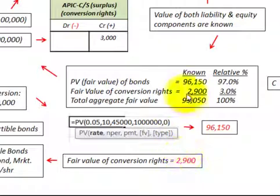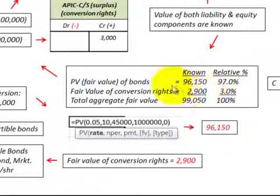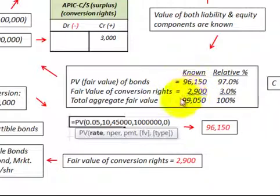Now let's figure out how to allocate amounts between the debt portion and the equity portion. We take these known amounts: the present value of the bonds without conversion rights at $96,150, plus the fair value of conversion rights at $2,900, for a total of $99,050. To find our relative percentages, we divide $96,150 by $99,050 to get 97% assigned to the debt portion, and divide $2,900 by $99,050 to get 3% assigned to equity. These relative percentages total 100%.